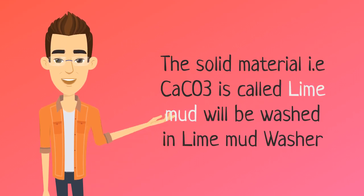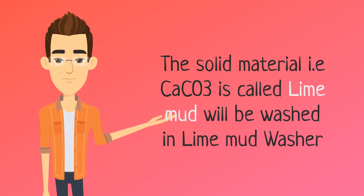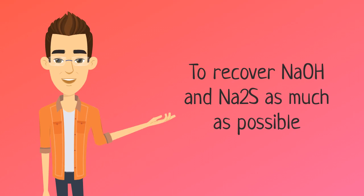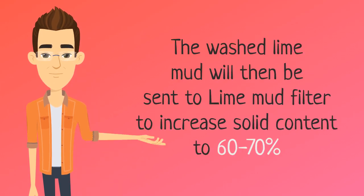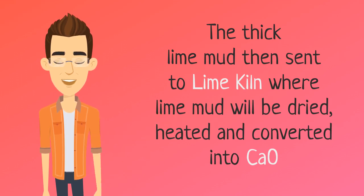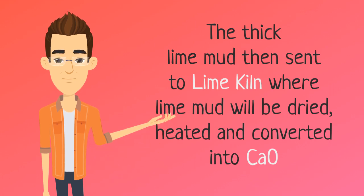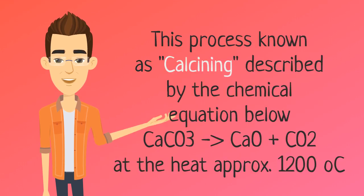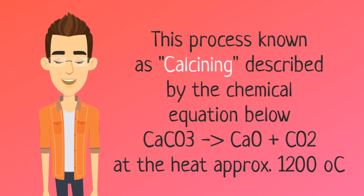The solid material, calcium carbonate, called lime mud, is washed in a lime mud washer to recover sodium hydroxide and sodium sulfide as much as possible. The washed lime mud is then sent to a lime mud filter to increase the solid content to 60 to 70 percent. The thick lime mud is then sent to the lime kiln, where it is dried, heated, and converted into calcium oxide. This process is known as calcining, described by the chemical equation where calcium carbonate is heated at approximately 1200 degrees Celsius to yield calcium oxide and carbon dioxide as products.